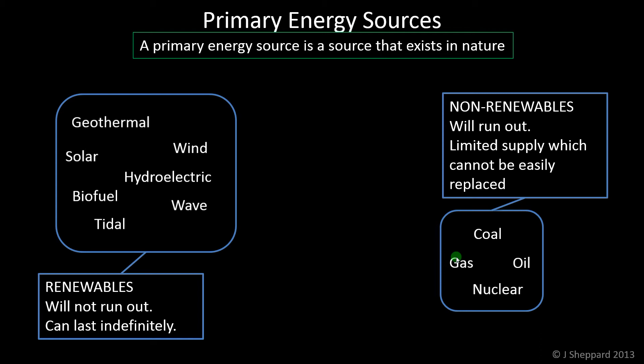The non-renewable resources will run out. And although they keep finding more coal, oil, gas, and nuclear fuel, there is definitely a limited supply. Because fossil fuel formation takes millions of years, and nuclear fuel was formed in the supernova explosion that helped form our solar system, it can't possibly be replaced in a short timescale. So it will run out and we can't replace it.